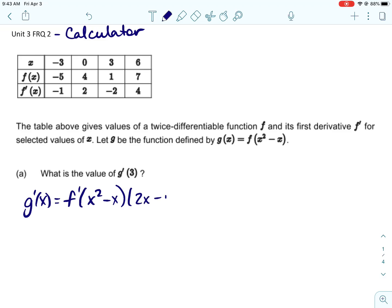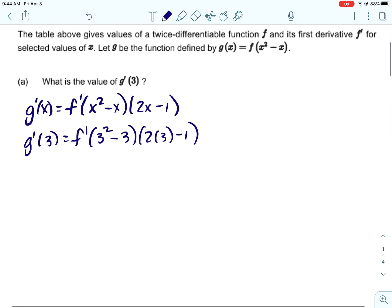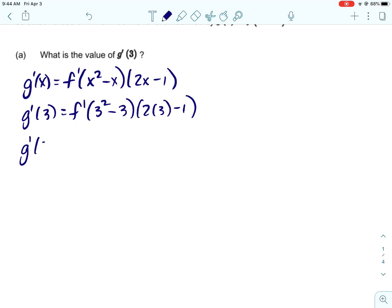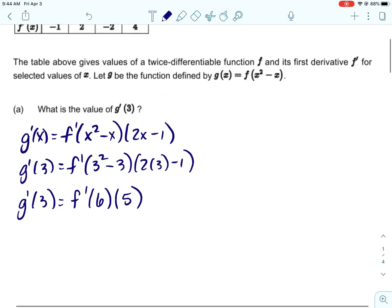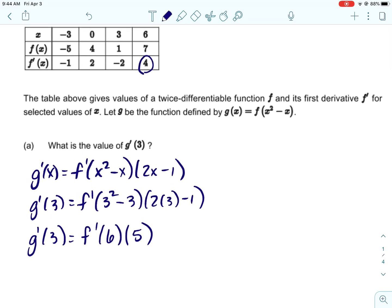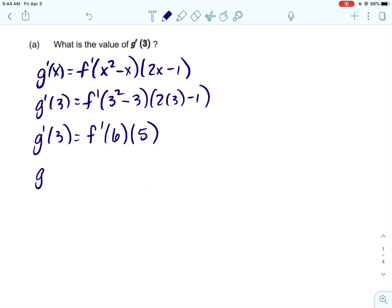So we'll start with g prime of x using the chain rule. It would be f prime, leave the inside alone, and then multiply by the derivative of the inside. And then we'll just take 3 and put it in for all of our x's. I'm just simplifying it down. f prime of 6, we go to 6, and from our table we can get that that is 4.